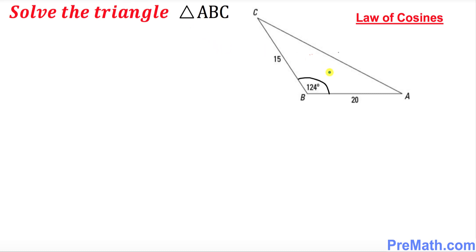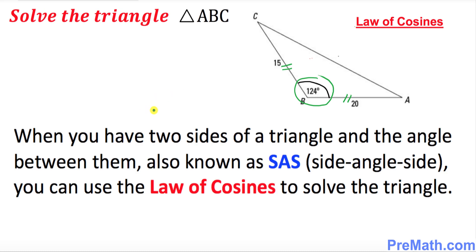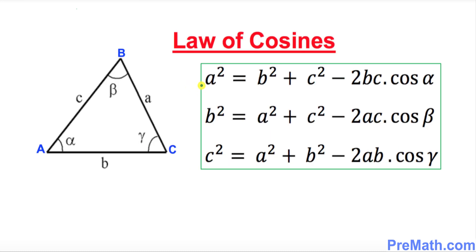Hello again everyone. In this video tutorial we are going to solve the given triangle ABC whose two sides and the angle between them is given. Remember that whenever we have been given two sides of a triangle and the angle between them, we are going to use the Law of Cosines to solve this triangle. Here are the Law of Cosines formulas we will be using during our calculations.